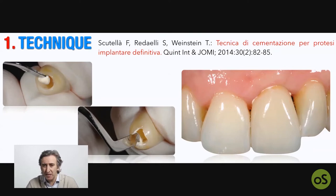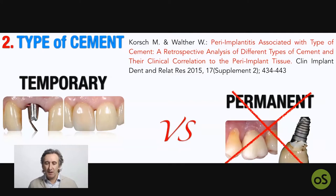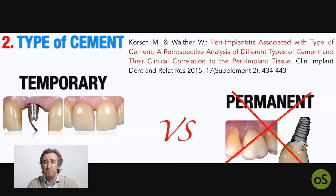What I suggest regarding the type of cement: never ever use a permanent cement — always go with a temporary cement. I know that in some cases, especially with zirconia abutments and lithium disilicate crowns, we cannot use a temporary cement and are forced to use a permanent cement. In those cases, we should pay attention to the technique of cementation.